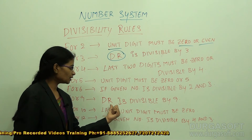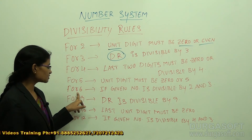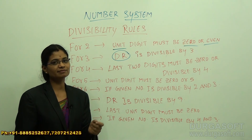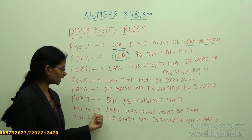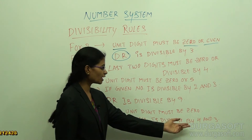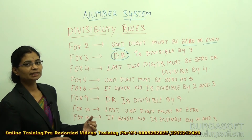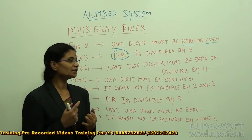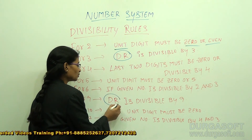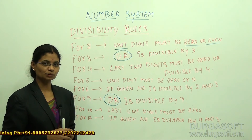For divisibility by 9: the digital root must be divisible by 9. Divisibility by 7 is a special case that we will discuss separately later. For 10: the unit digit must be 0. For 12: the number must be divisible by both 4 and 3. There are special cases for divisibility by 7 and 13 which we will discuss next, along with the concept of the digital root, which plays an important role in this number system.